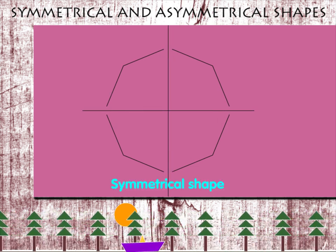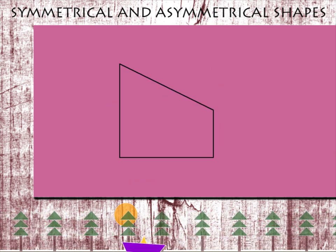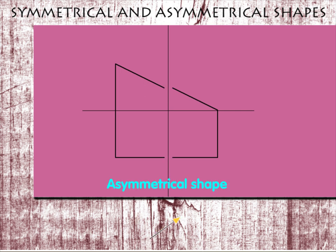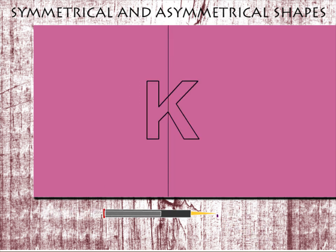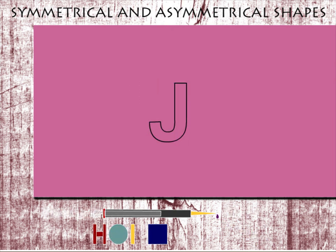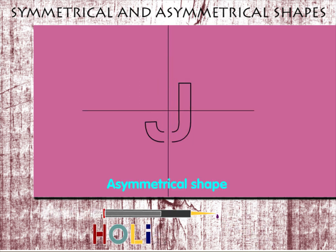Here is the outline of a factory building. This is asymmetrical because it cannot be divided into mirror duplicates. Thus, letter K and letter J are both asymmetrical.